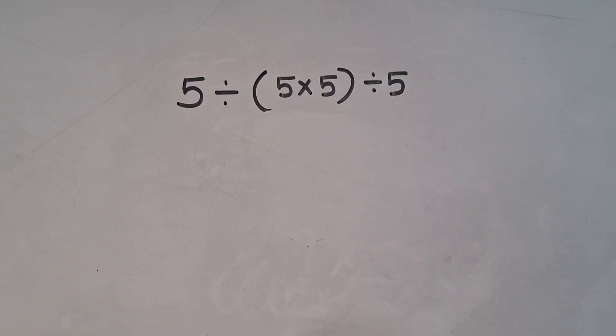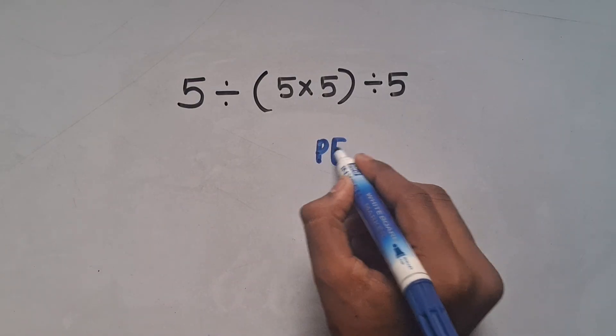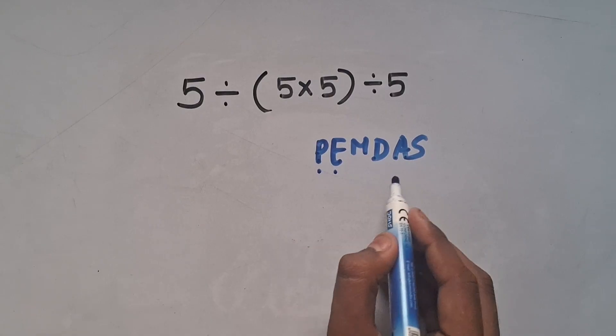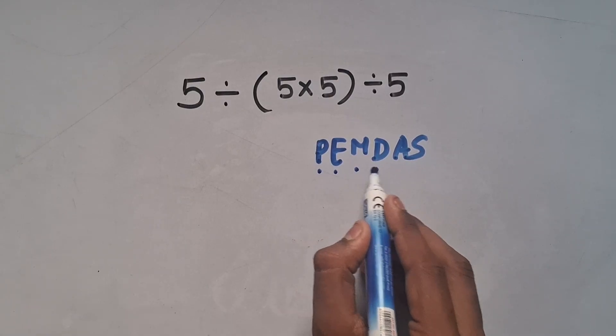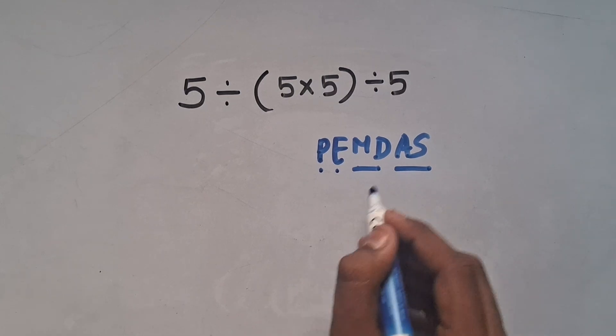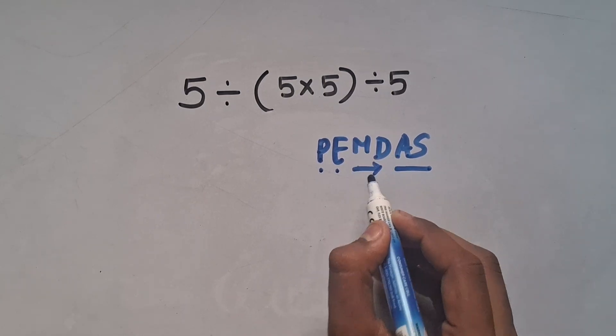According to the order of operations, which is called PEMDAS: P stands for parentheses, E stands for exponents, M and D stand for multiplication and division, and A and S stand for addition and subtraction. We have to solve multiplication and division from left to right.